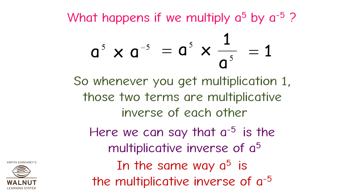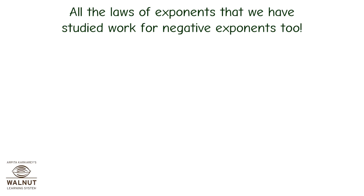In the same way, a raised to 5 is the multiplicative inverse of a raised to minus 5. All the laws of exponents that we have studied work for negative exponents too.